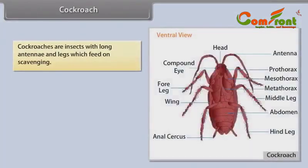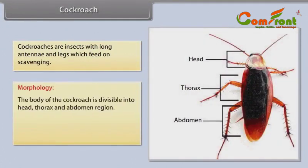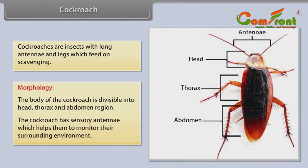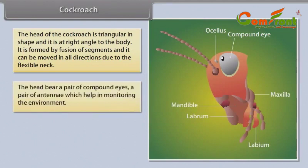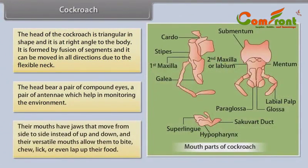Cockroach: Cockroaches are insects with long antennae and legs which feed by scavenging. The body is divisible into head, thorax and abdomen. The cockroach has sensory antennae which help monitor the surrounding environment. The head is triangular in shape and at right angle to the body, formed by fusion of segments and moveable in all directions due to a flexible neck. The head bears a pair of compound eyes and a pair of antennae. Their mouths have jaws that move side to side, allowing them to bite, chew, lick or lap up food.